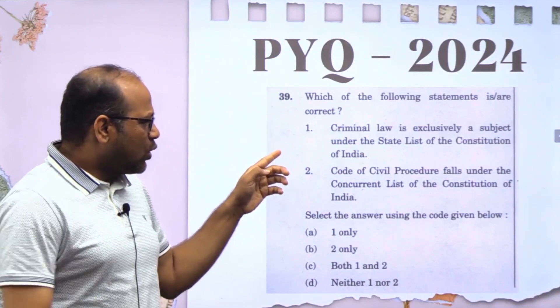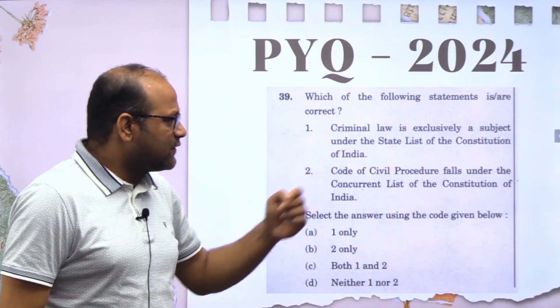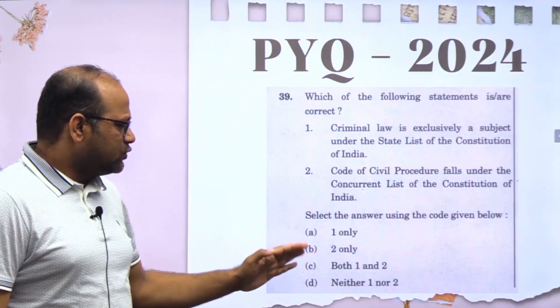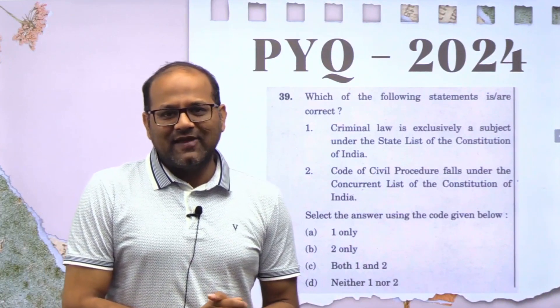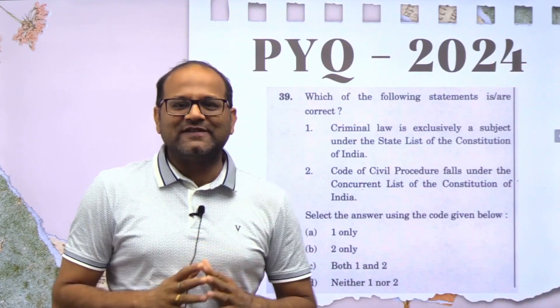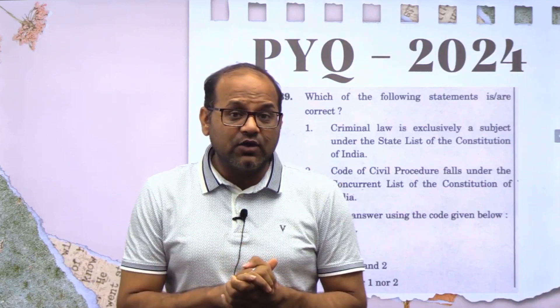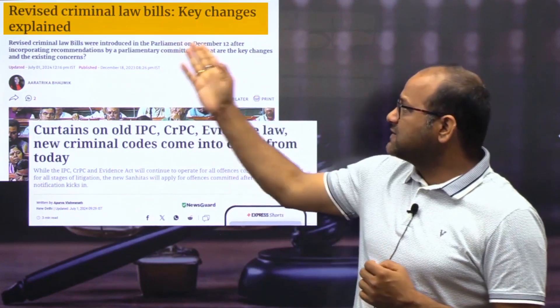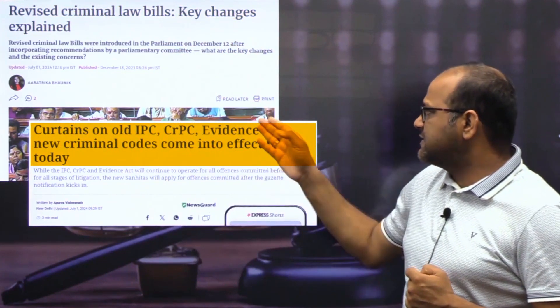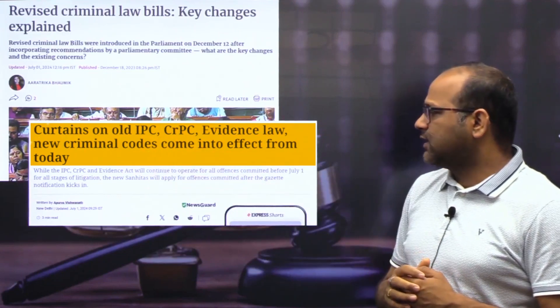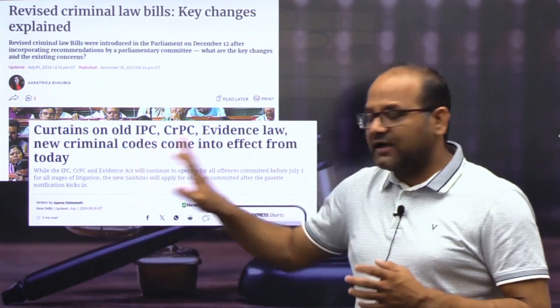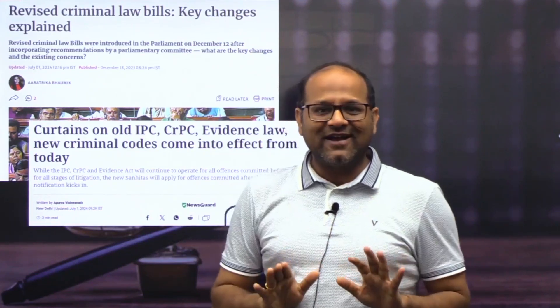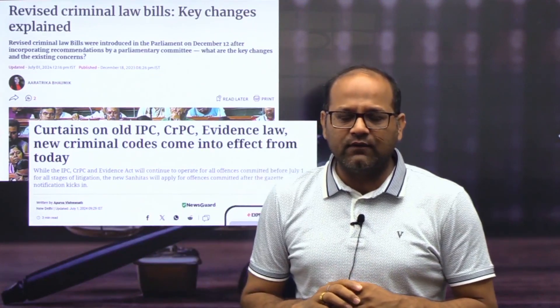The second statement given is: 'The Code of Civil Procedure falls under the concurrent list of the Constitution of India.' Select: only one, only two, both one and two, or neither. You must have come across these headlines — 'Revised criminal law bills: key changes explained', 'Curtains on the old IPC, CrPC, Evidence Law', 'New criminal codes come into effect from today' — that today being 1st July 2024. So the inspiration is from current affairs.